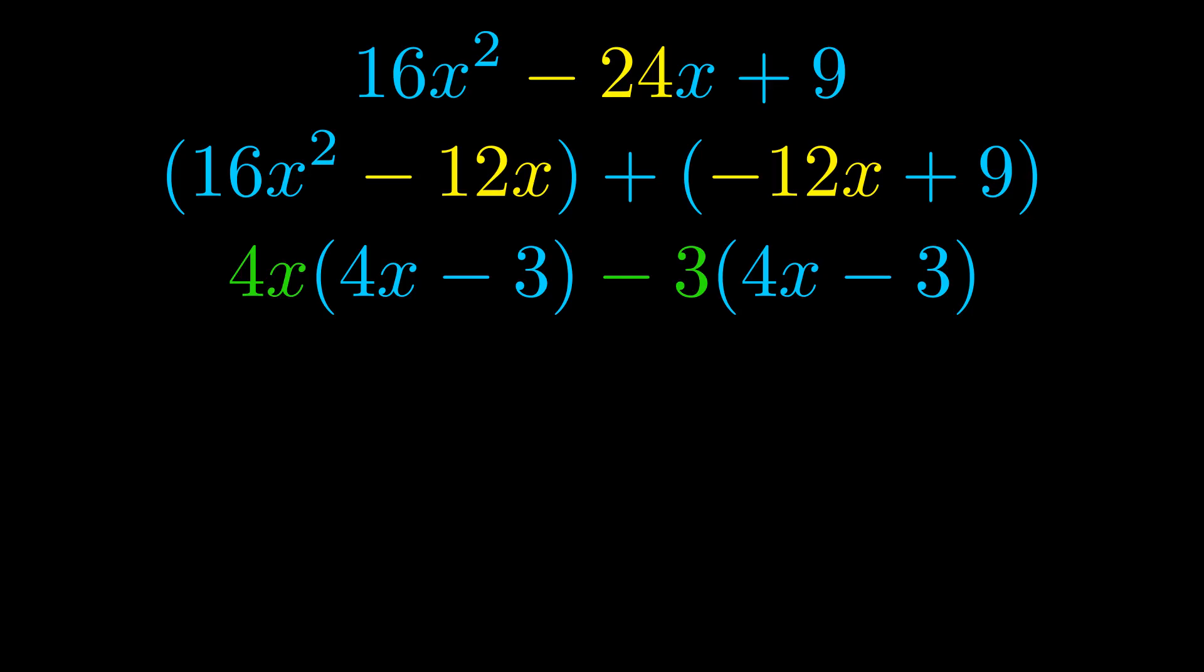Notice also how what remains inside of the parentheses is the same in both cases. The blue values are the same. Those blue values will become one of our factors and we will combine the two green values, the GCFs that we pulled out, to get the other one. And that is our fully factored equation.